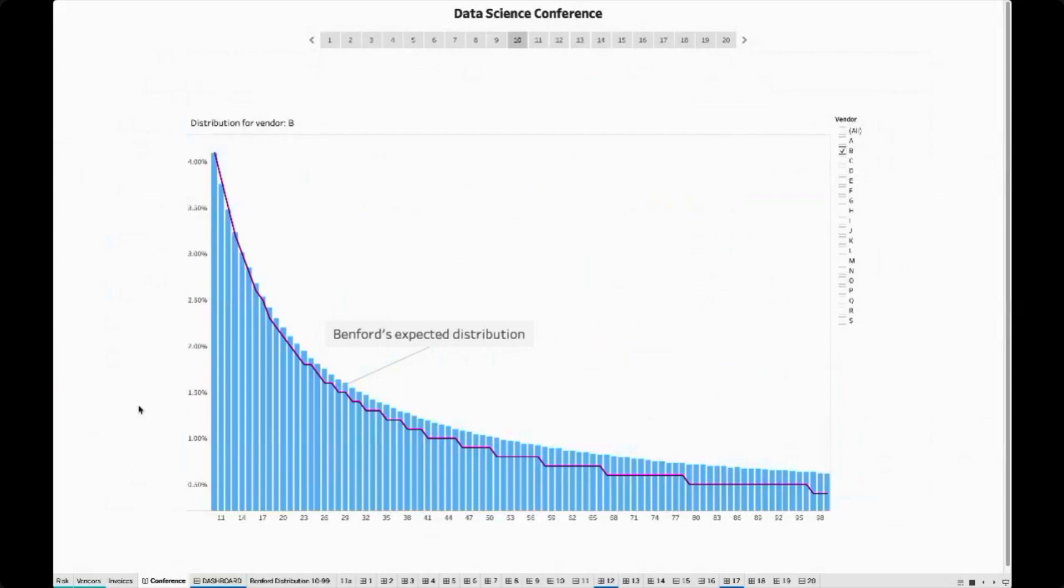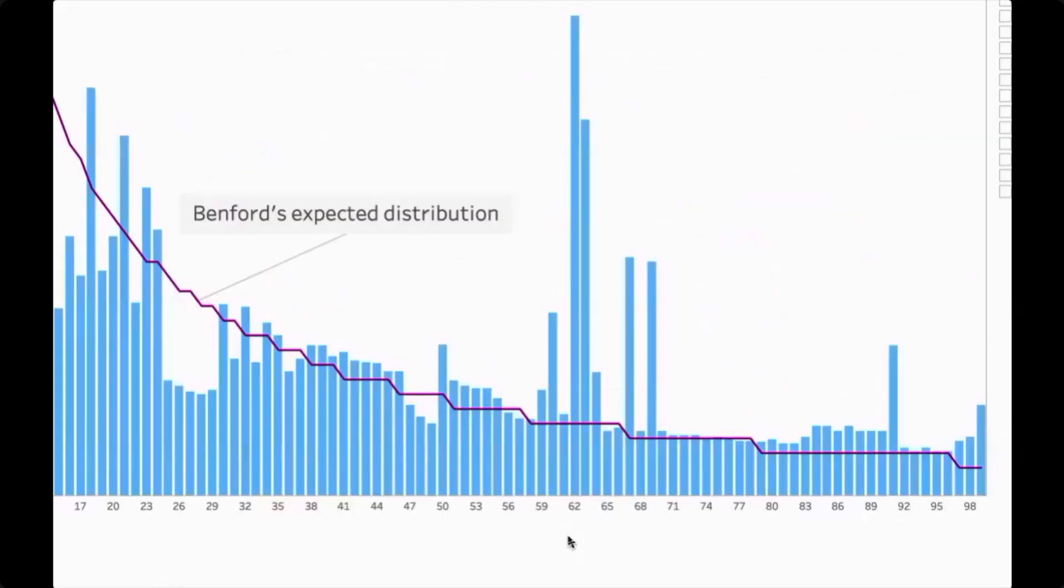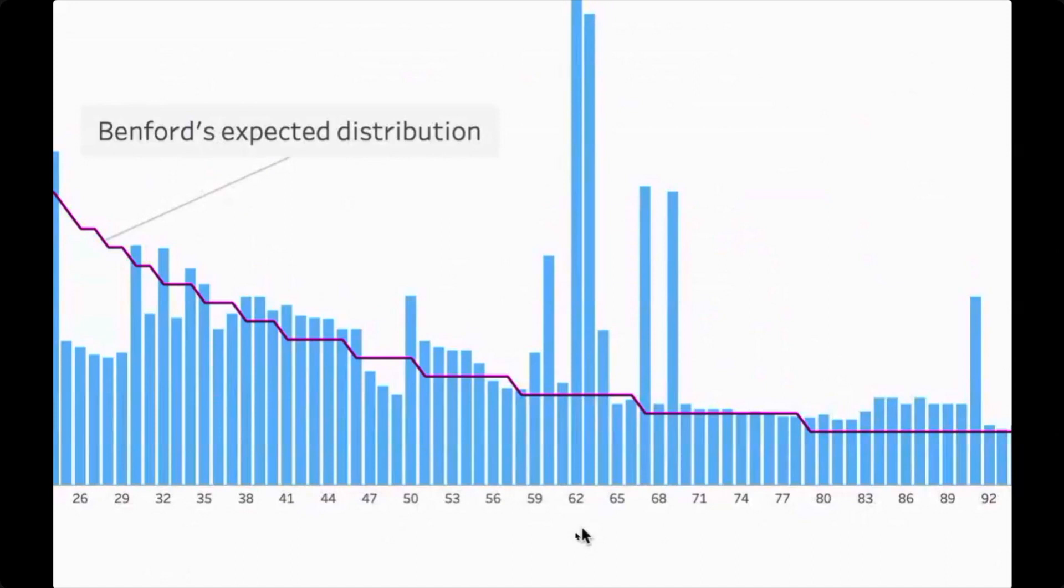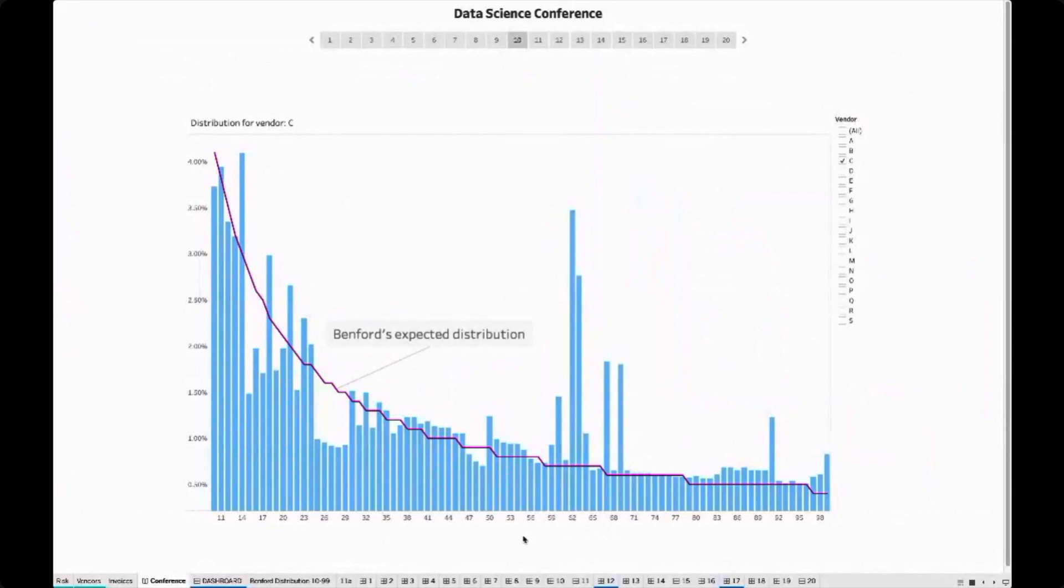Why is a histogram so important? Well, one reason is because it can easily visualize anomalies in our data. Now let's look at the vendor where the distribution deviates strongly from Benford's expected distribution. And let's switch to Z. For example, here, we can see a huge spike for invoices starting with the digit 62. This here indicates a potential fraud. But of course, we don't want to manually check each vendor if they confirm or not. This is why we create an algorithm which does this job for us automatically around the clock and in near real time.